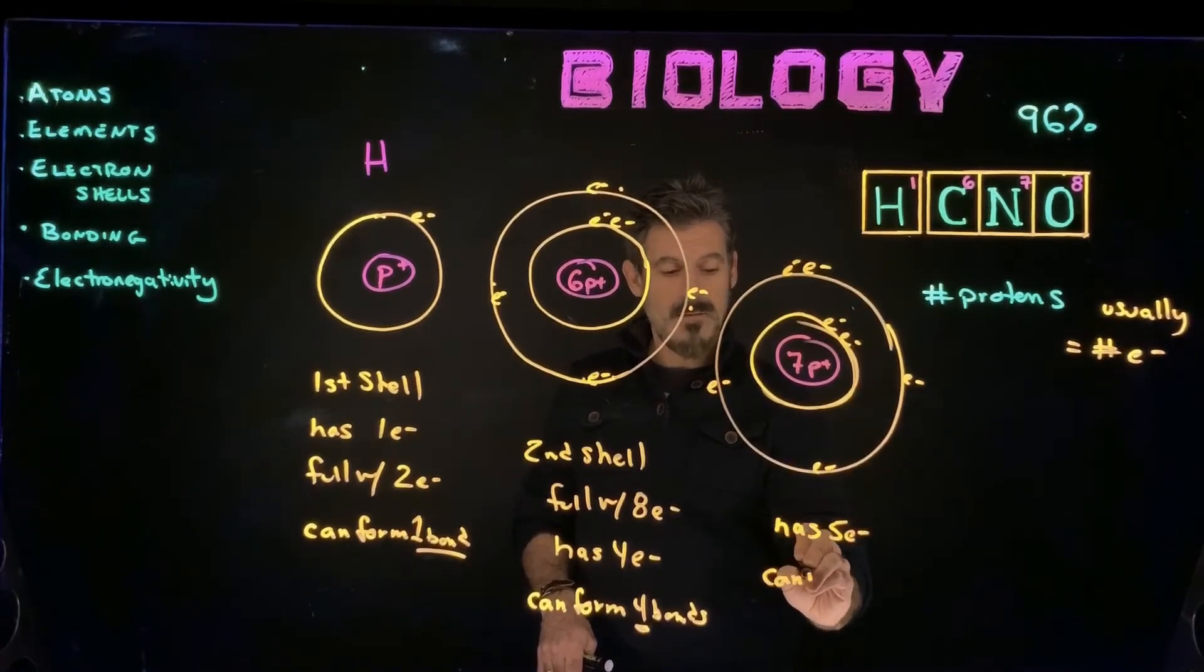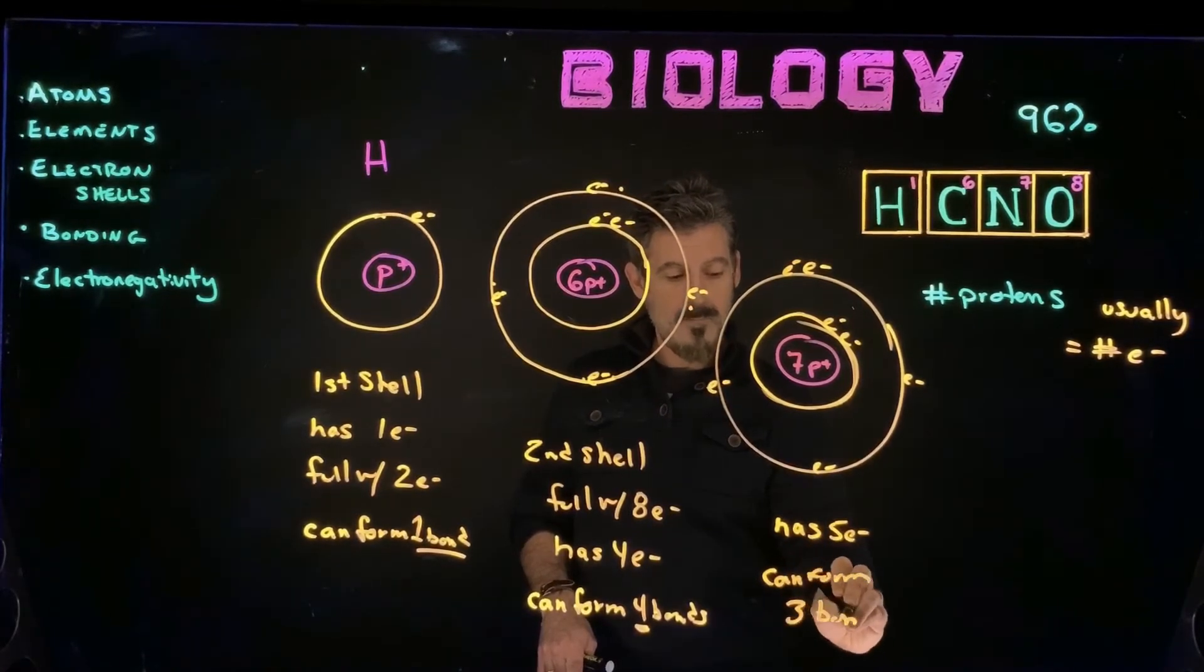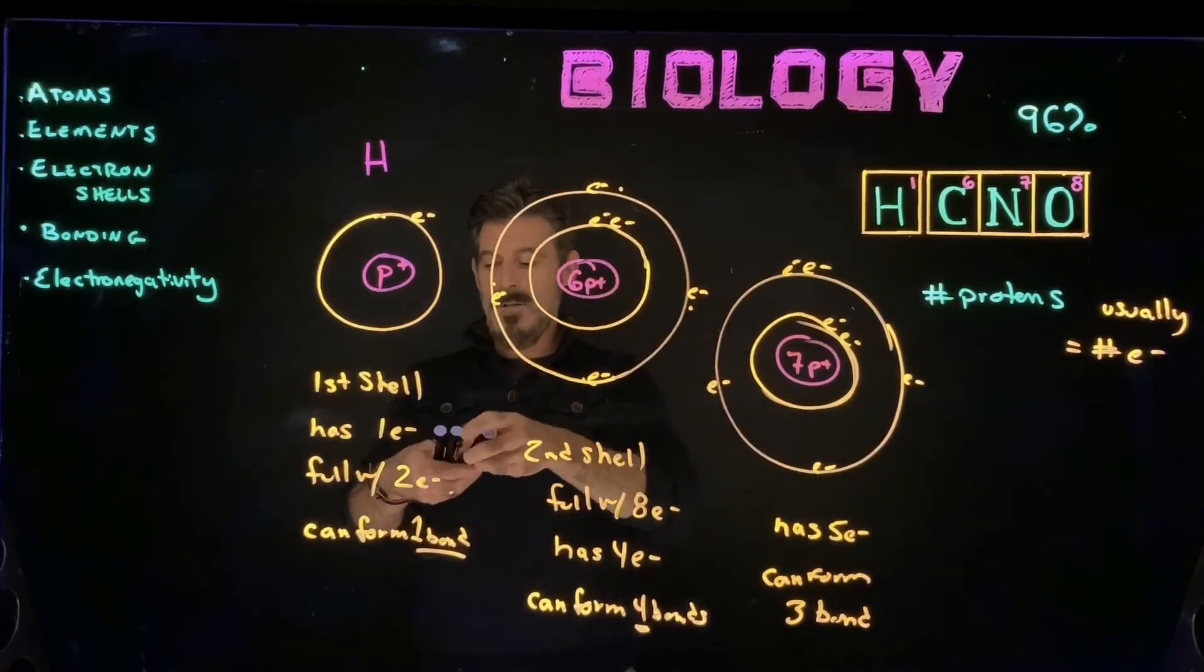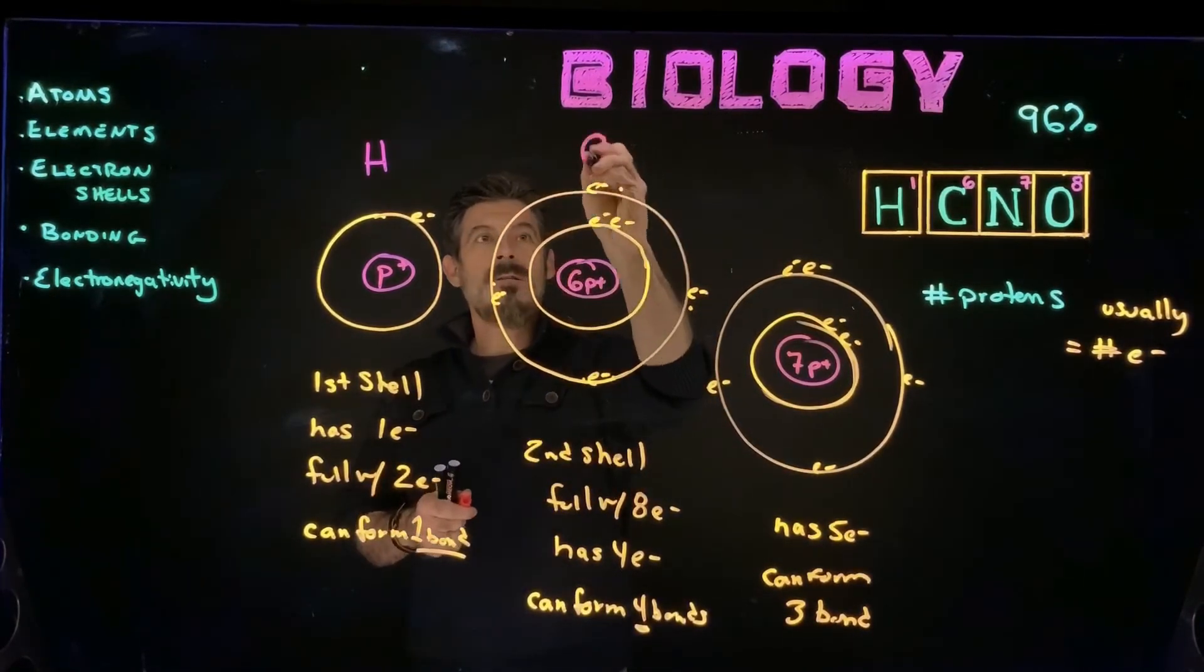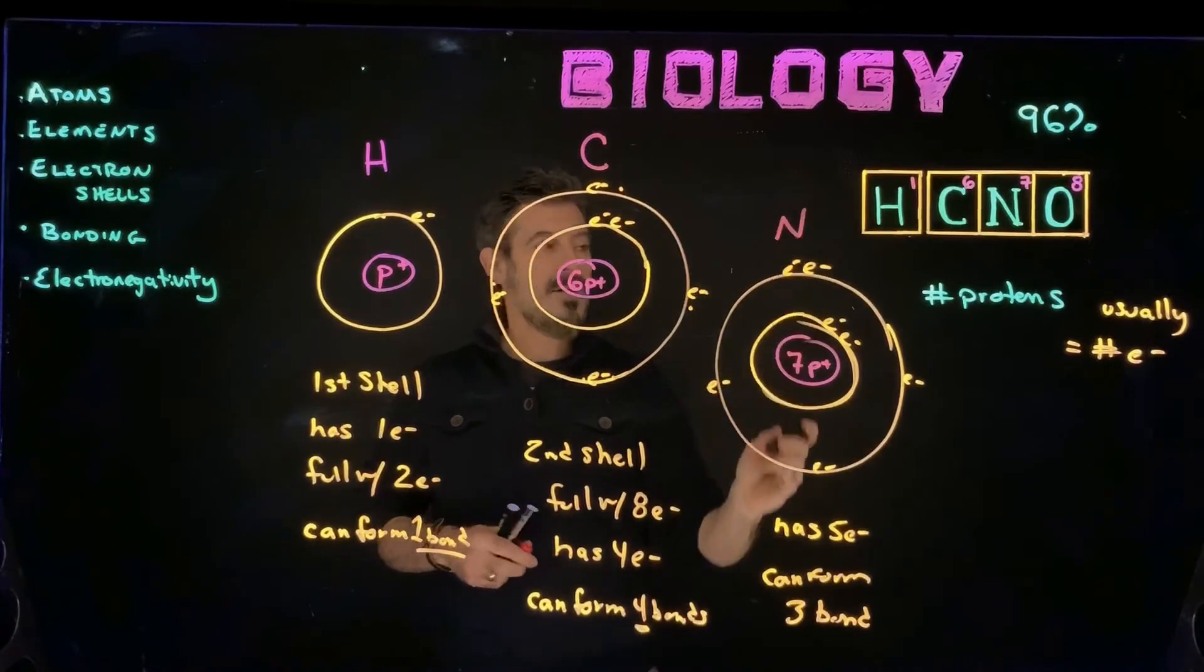So it can form three bonds. So that's for nitrogen, so we got, that's hydrogen here. This is carbon. Here we have nitrogen. And then lastly, we'll do oxygen.